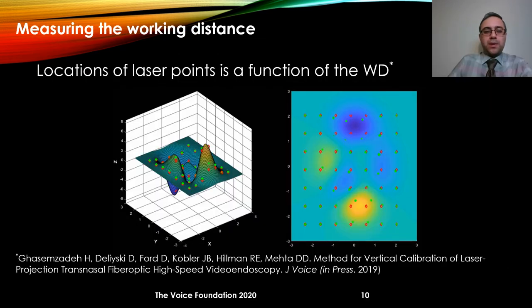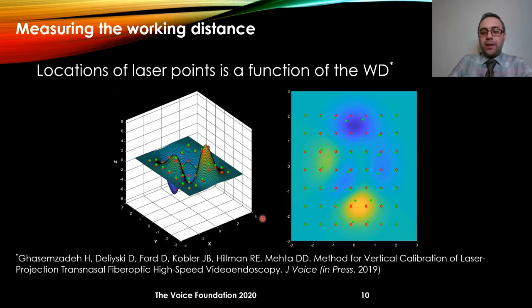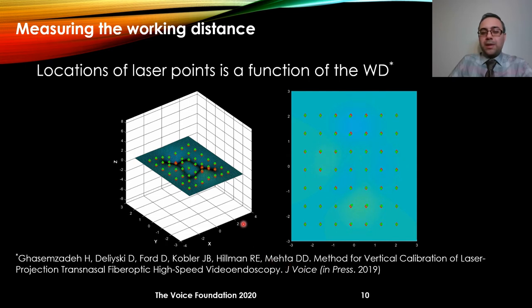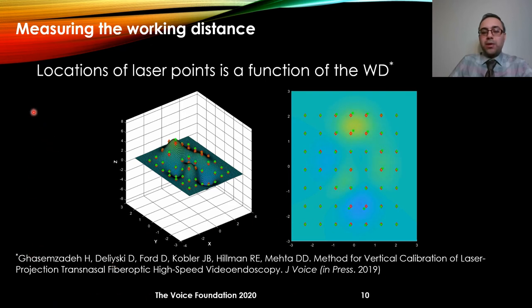In order to do horizontal measurement, we need to determine the distance between the object and the tip of the endoscope. This simulation shows the main principle behind that. There are two sets of points: the red points denote the position of the laser point if the surface were flat, and the green points show the actual position of the laser point as the surface deforms. We can use that information for estimating the distance between each of these points and the endoscope. If you are interested, you can refer to the article already published in the Journal of Voice.